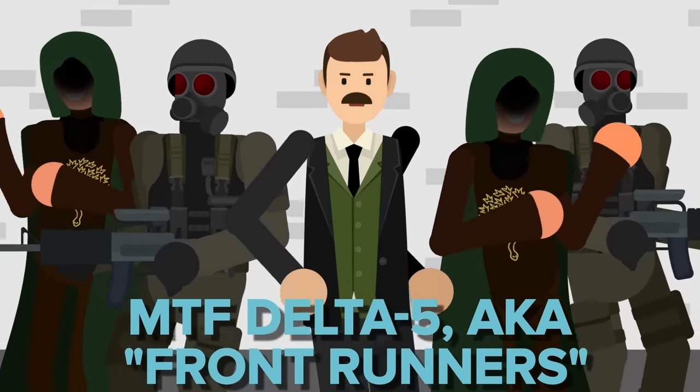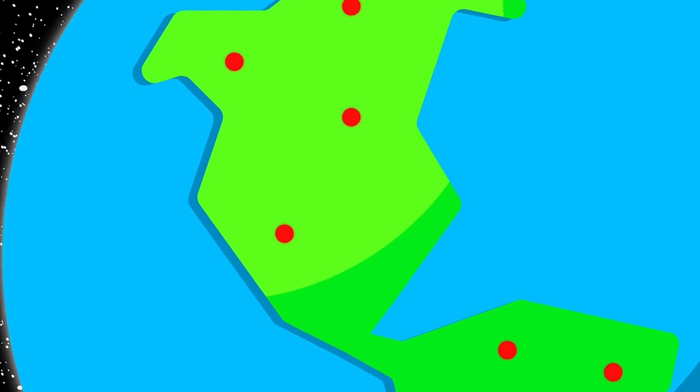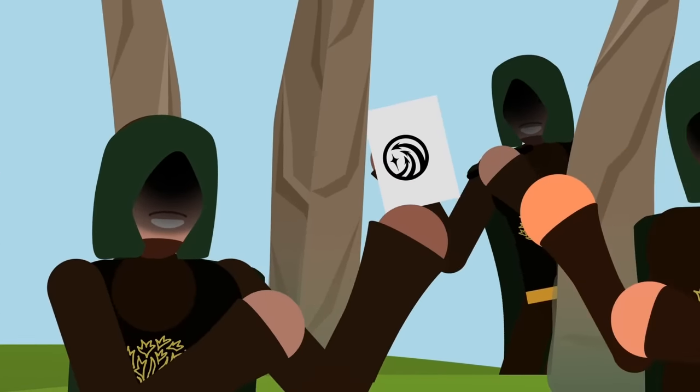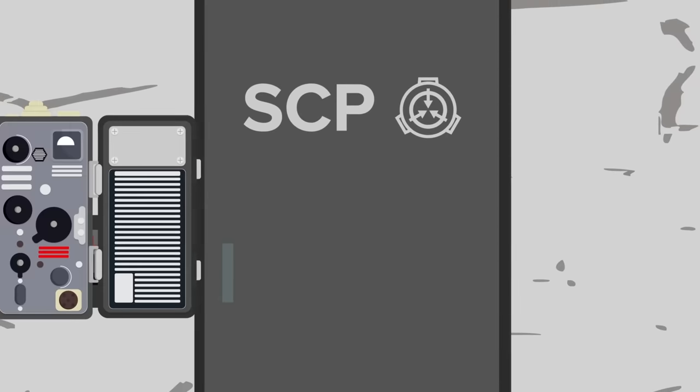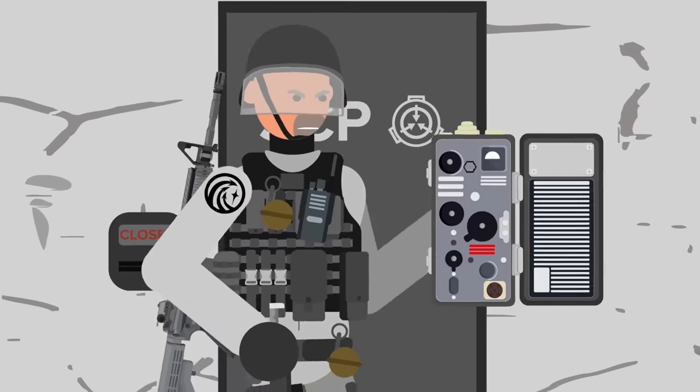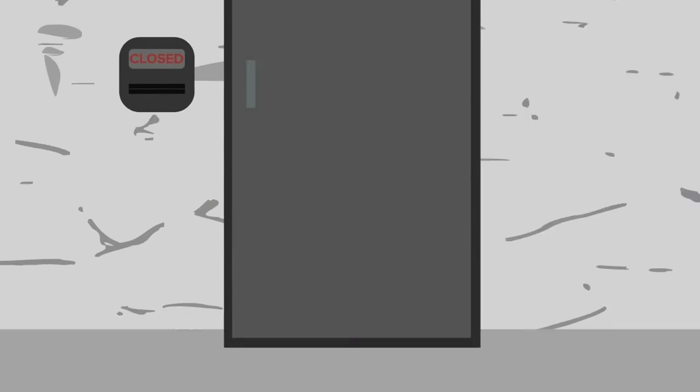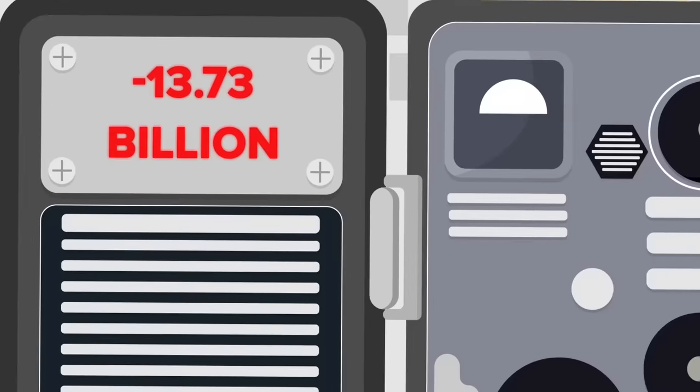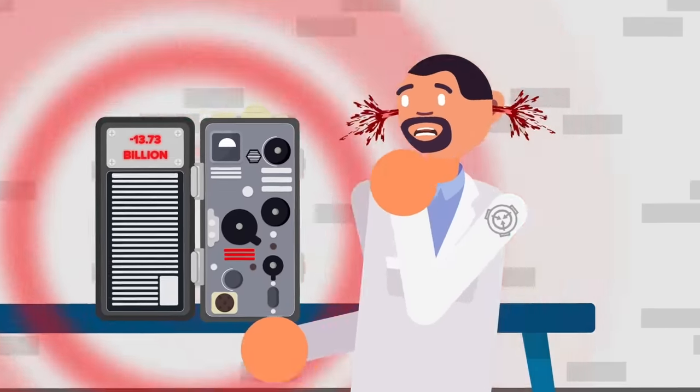MTF Delta-5, aka Frontrunners, are a large group of autonomous deep cover agents buried in various groups of interest across the globe. It's their job to gather intelligence from within, to aid in the apprehension of anomalies before these groups can get their hands on them. They also sometimes make use of anomalies to track down others, such as when they requested to use SCP-185, a Russian R-105M radio used during the Cold War that can receive signals from any time period, including encrypted ones, but can also emit sound waves so powerful they can literally kill you.